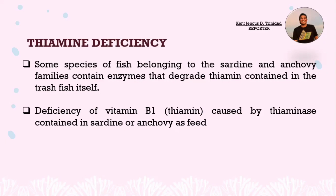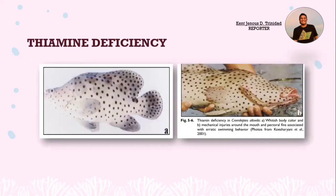Another example is thiamine deficiency. Some species of fish belonging to the sardine and anchovy families contain enzymes that degrade thiamine contained in the trash fish itself. Deficiency of vitamin B1 or thiamine is caused by thiaminase contained in sardine or anchovy feed. Thiamine deficiency in Cromileptes altivelis presents with whitish body color, mechanical injuries around the mouth and pectoral fins, associated with erratic swimming behavior.